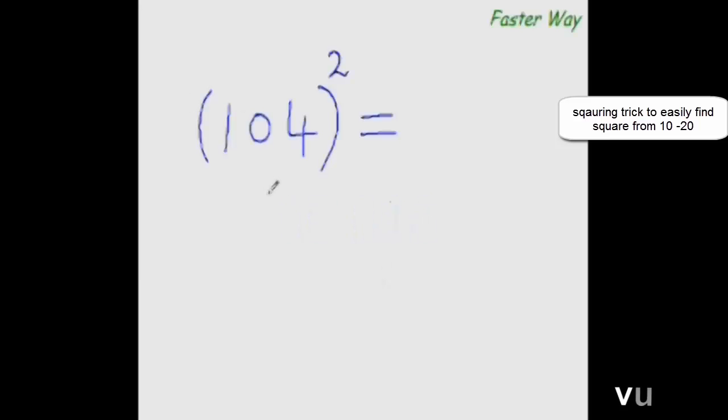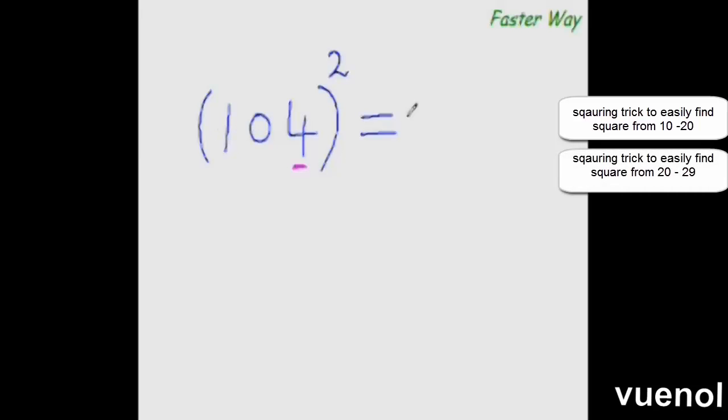Now all you need to do to find the square of 104 is to add this digit to this entire number. So what is 4 plus 104? It is 108 and you get the first three digits of your answer. Now two more digits to go. So just find the square of this digit again. So square of 4 is 16. So that is what your answer is. See it's so simple that is why I said mentally and in three seconds. Now you know it was no big deal.